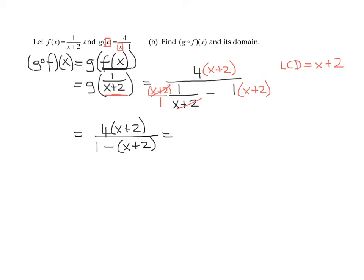We can multiply out the numerator. We don't have to. I think it'd be better to leave it in factored form. But the denominator, we have to simplify it. So it's 1 minus x minus 2.